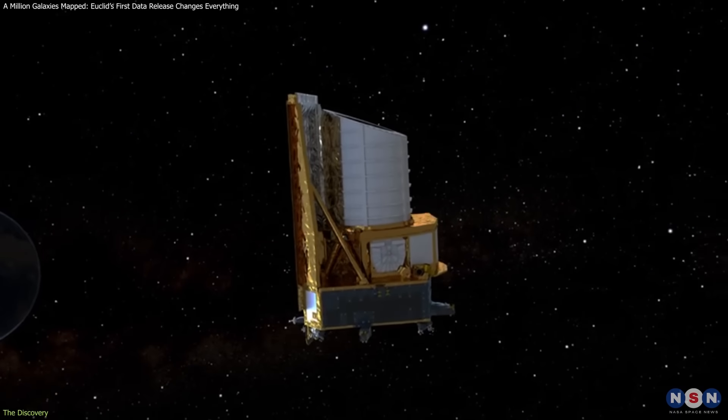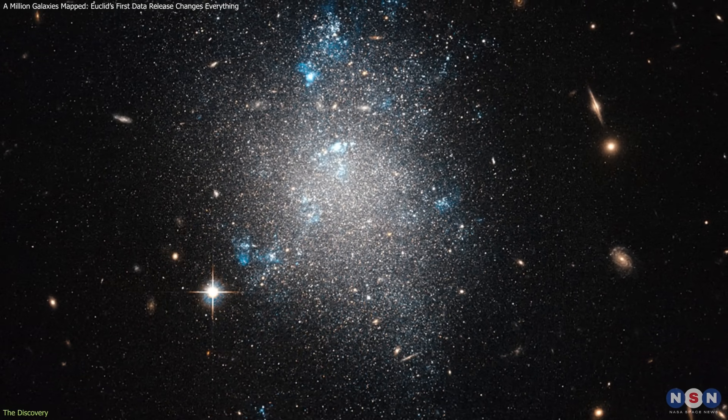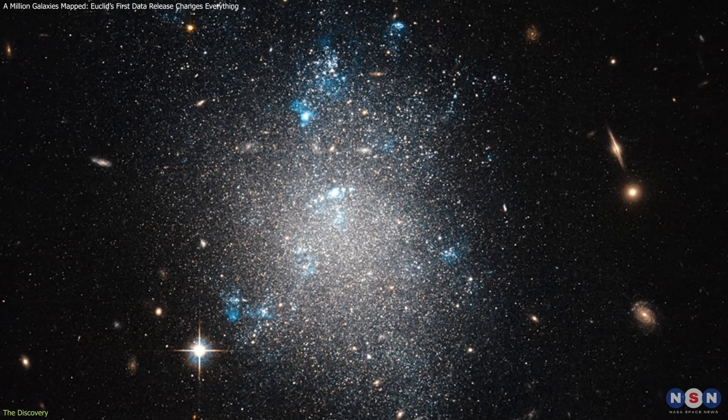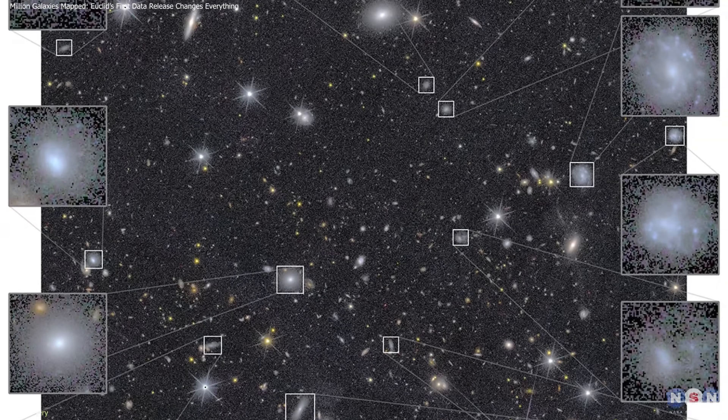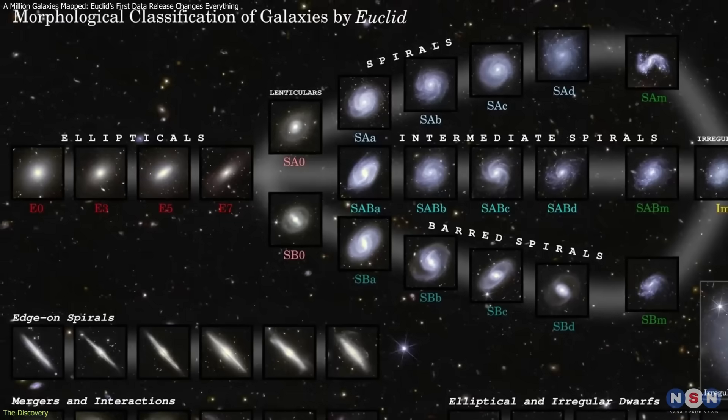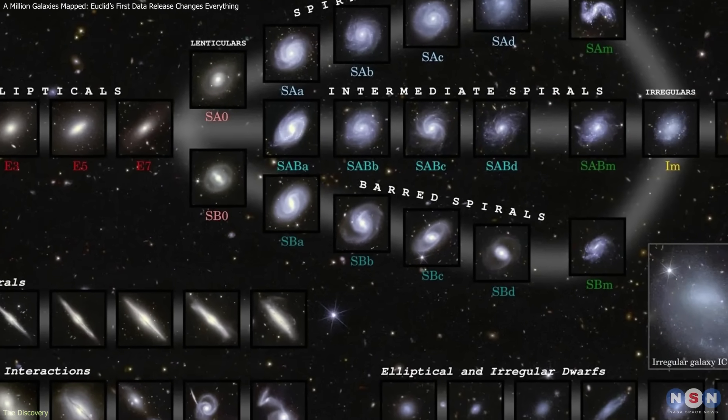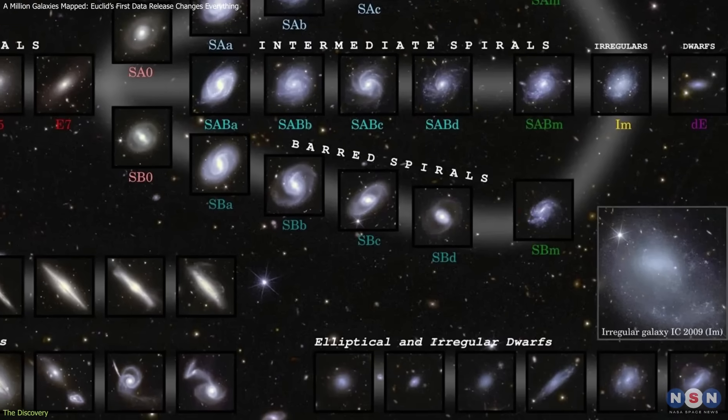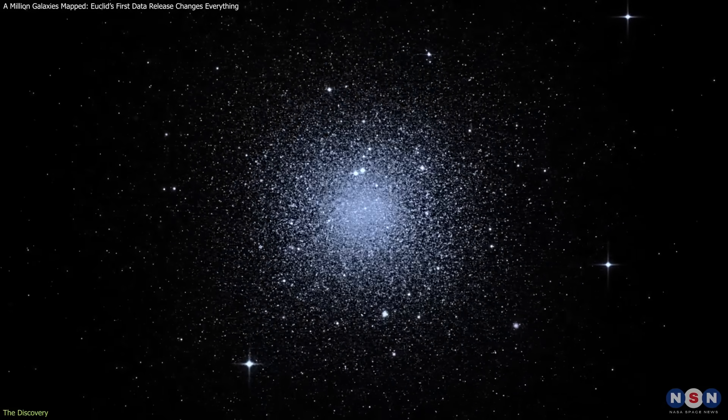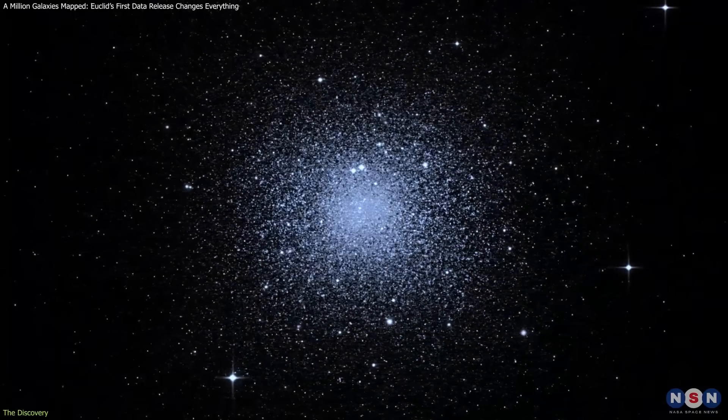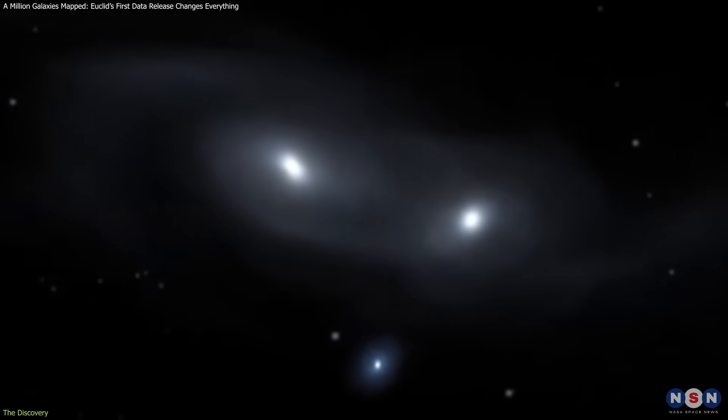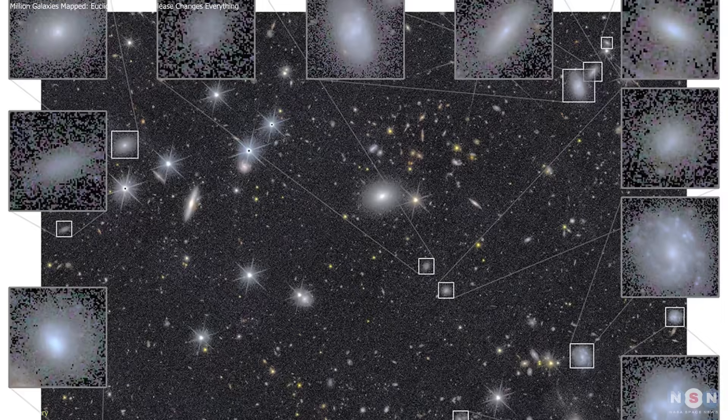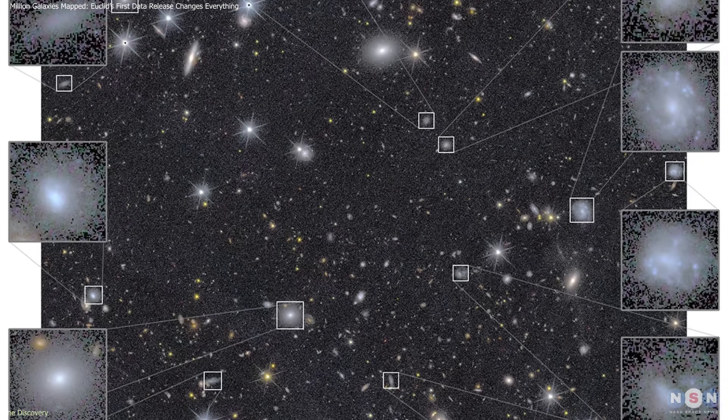Euclid is also revealing a much clearer picture of dwarf galaxies, which are the most common type in the universe but often too faint to study in detail. The telescope's sensitivity shows that dwarf galaxies appear in large numbers, even at significant distances, with early morphological breakdowns showing 58% elliptical and 42% irregular. Some contain compact blue cores or globular clusters, giving clues about their internal structure. Because dwarfs are the building blocks of larger galaxies, understanding their variety helps clarify the early stages of galactic assembly.